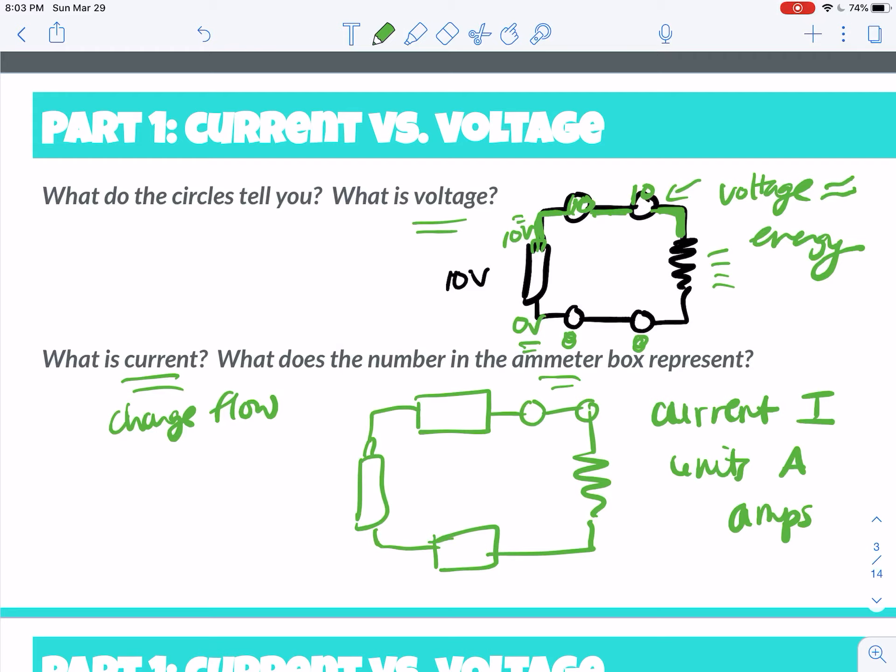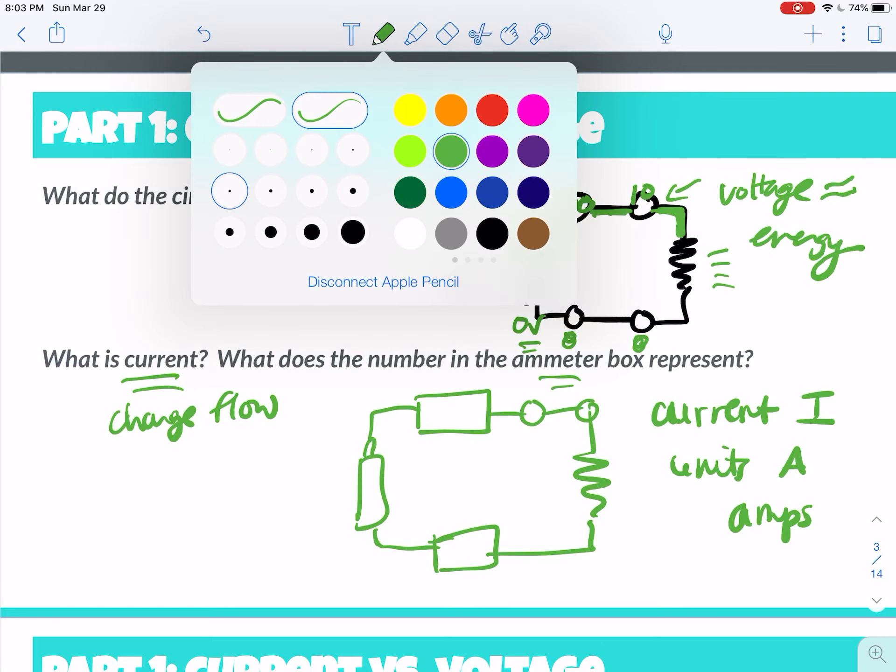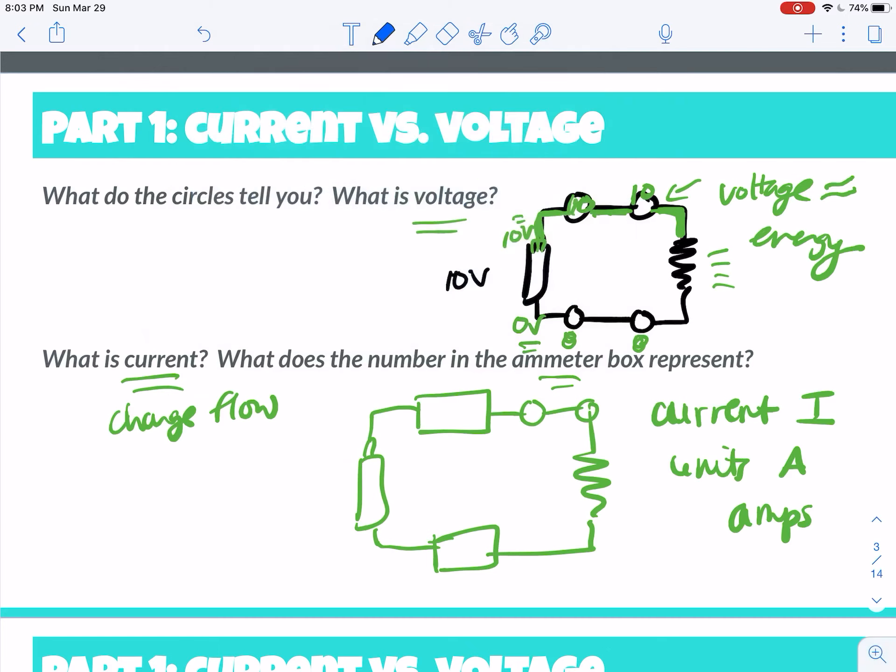So since the ammeter has to read the current flow, all right, it means that it needs to be hooked as part of the circuit, okay? So that the charges actually would go through the ammeter in order to move around the circuit. So it might say like one amp or something in here, okay? And for now, we're just doing one simple loop, so all the ammeter should read the same thing, okay? So the ammeter reads the current. It's in, actually in the circuit, okay?